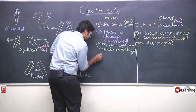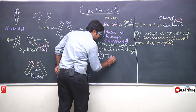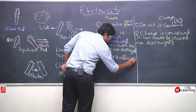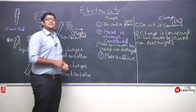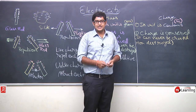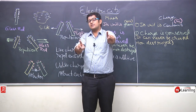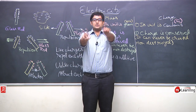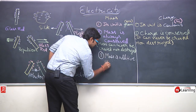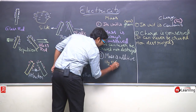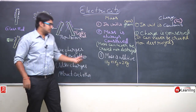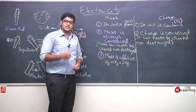Third property: mass is additive. Mass is additive means mass can be added. If you take 1 kg and add another 1 kg, you get 2 kg. This is the additive property of mass — you can add masses.